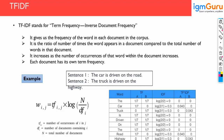TF-IDF and Bag of Words are limited vectorization techniques. At the document level — multi-page research papers and large documents — these are not good vectorization techniques. This is where we get the new concept of word embedding. Word embedding is the advanced-level vectorization technique also used in generative AI.